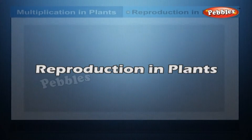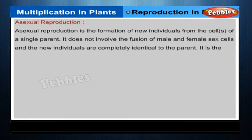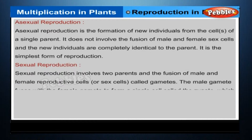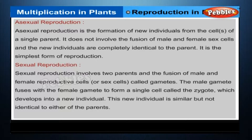Asexual reproduction is the formation of new individuals from the cells of a single parent. It does not involve the fusion of male and female sex cells, and the new individuals are completely identical to the parent. It is the simplest form of reproduction.